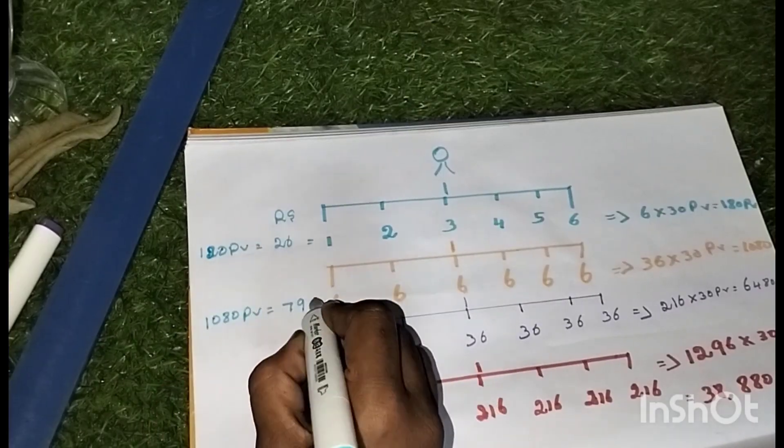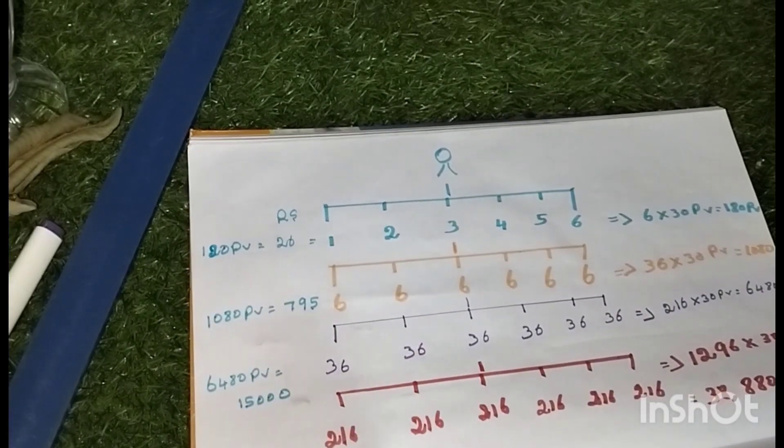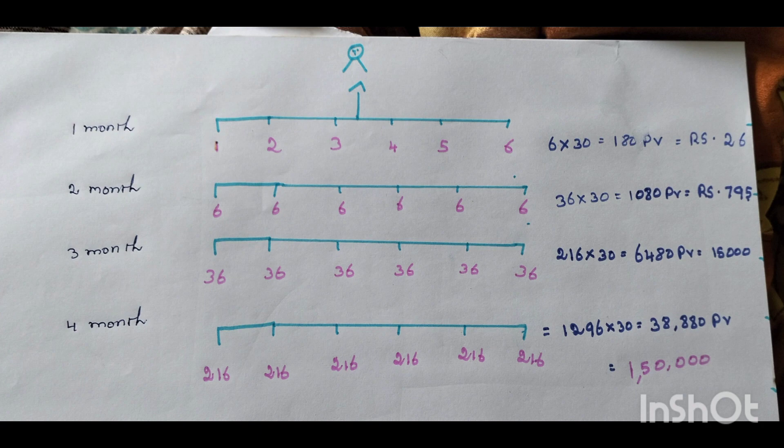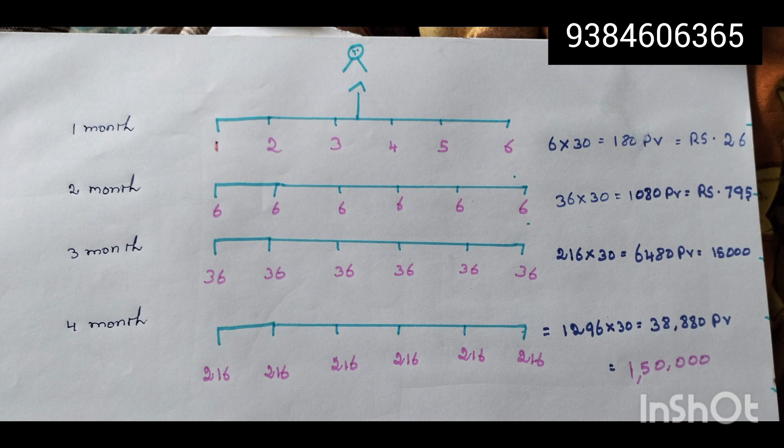First, we will form. We will form 6 names and we will form. We will form 6 names for 1 and we will purchase. We will pay 180 PV. We will pay 20,000 rupees.